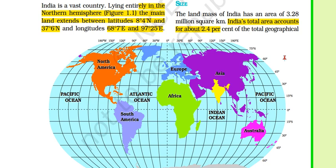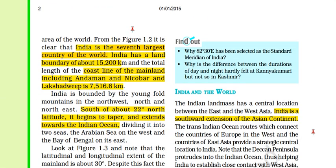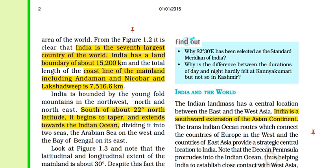Talking about size — the land mass of India has an area of 3.28 million square kilometers. India's total geographical area is 2.4 percent of the world. India is the seventh largest country in the world. India's land boundary is 15,200 kilometers in length.